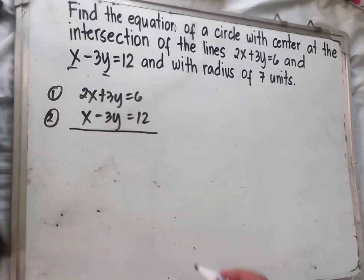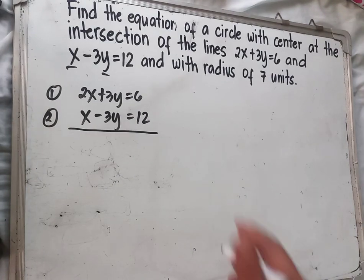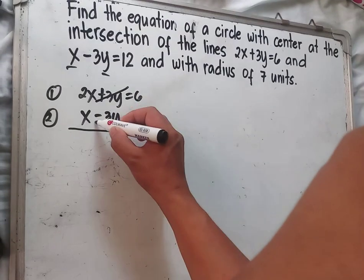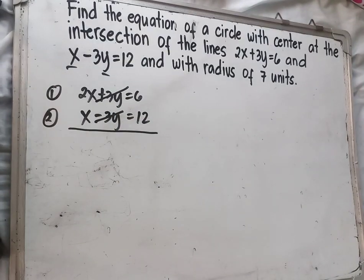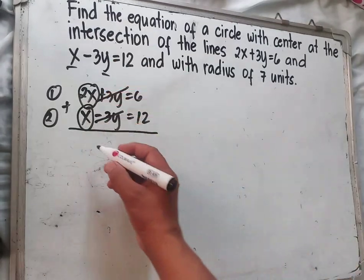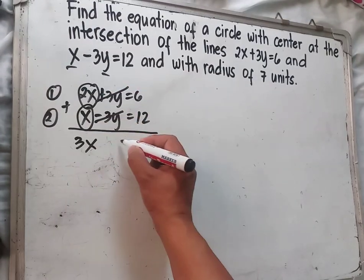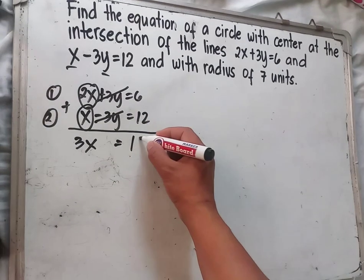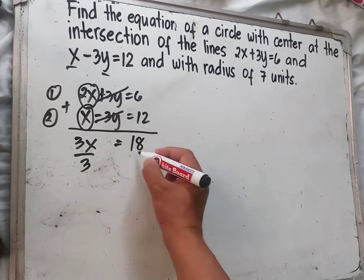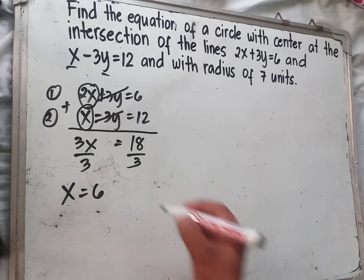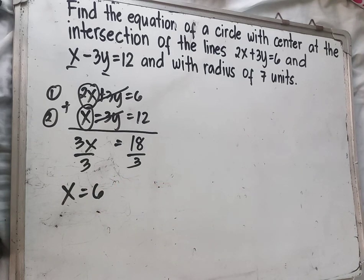Using the elimination method, the 3y and negative 3y cancel out. Adding the remaining terms: 2x plus x gives 3x, and 6 plus 12 gives 18. So 3x equals 18. Dividing both sides by 3, the value of x is 6.